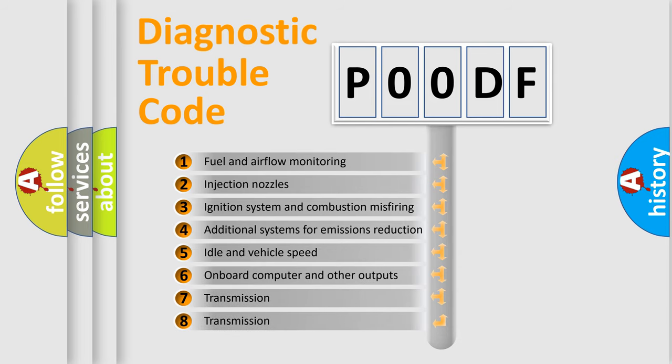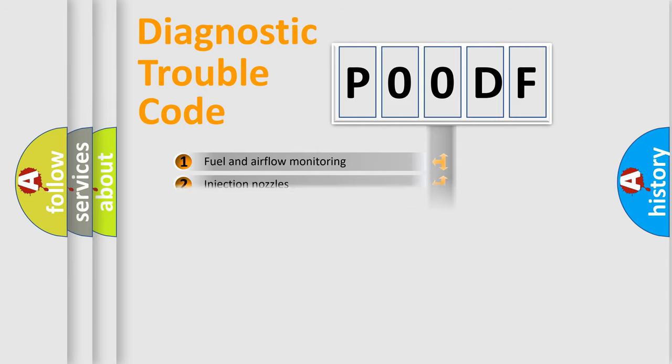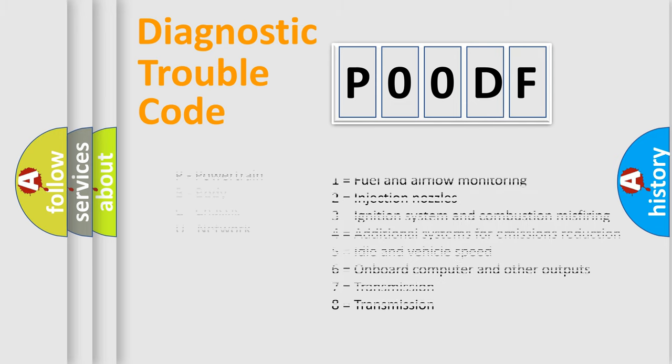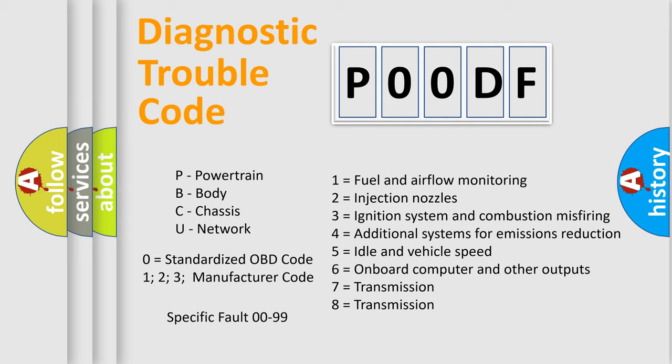The distribution shown is valid only for the standardized DTC code. Only the last two characters define the specific fault of the group. Let's not forget that such a division is valid only if the second character code is expressed by the number zero.